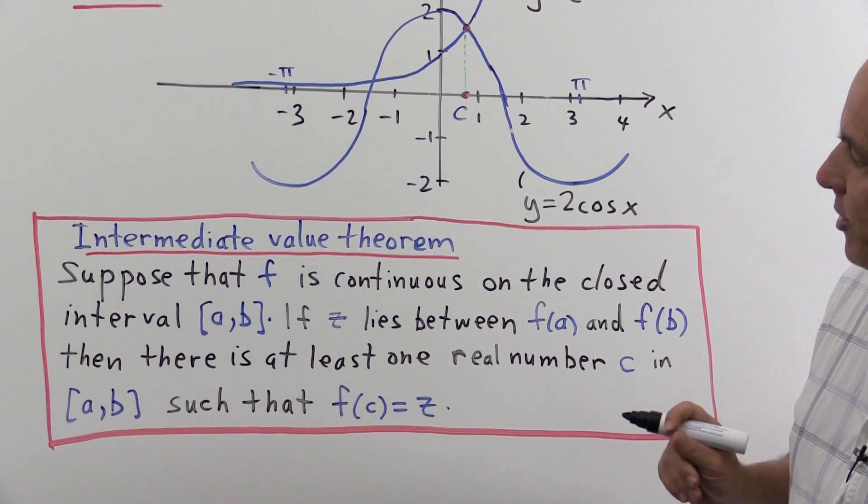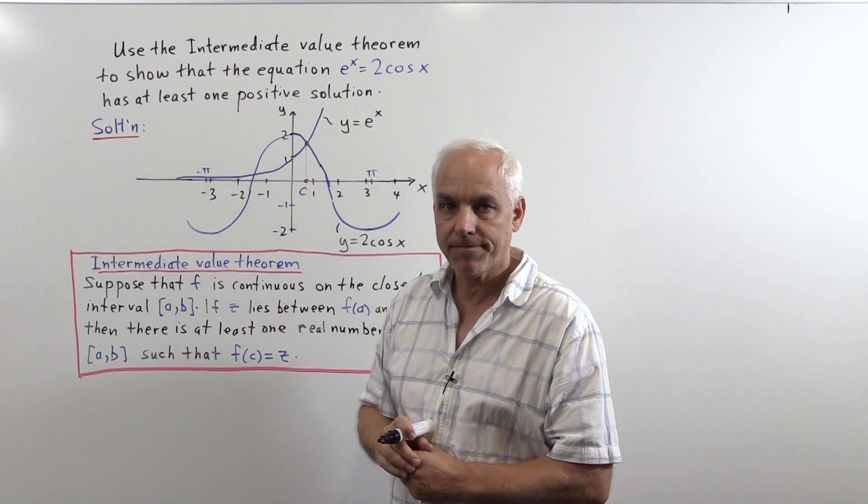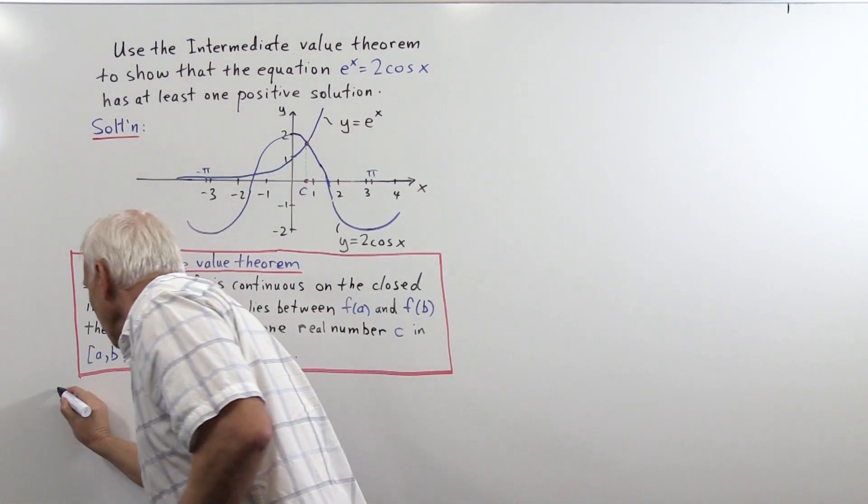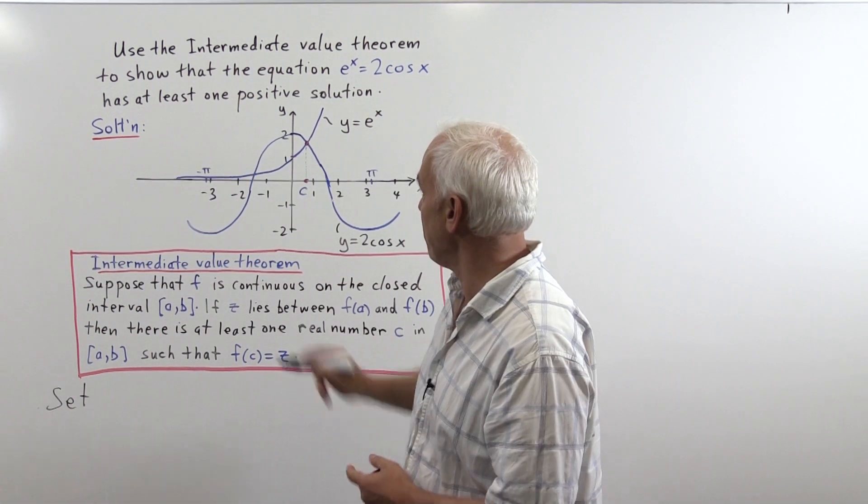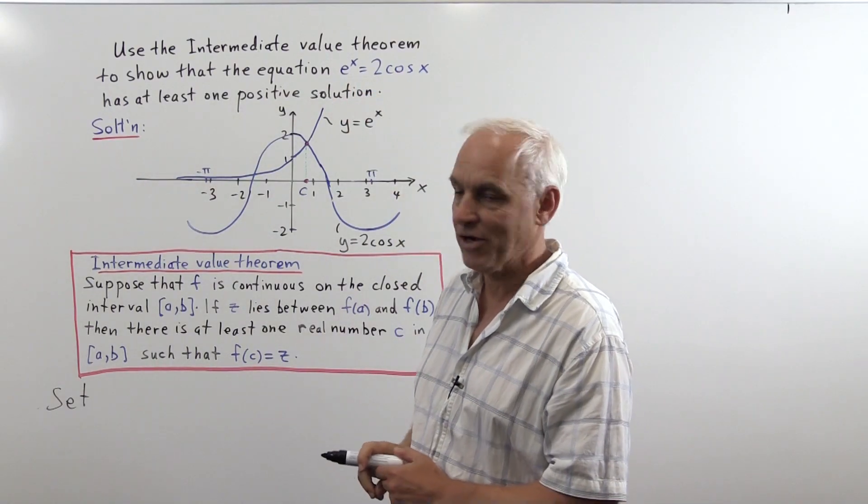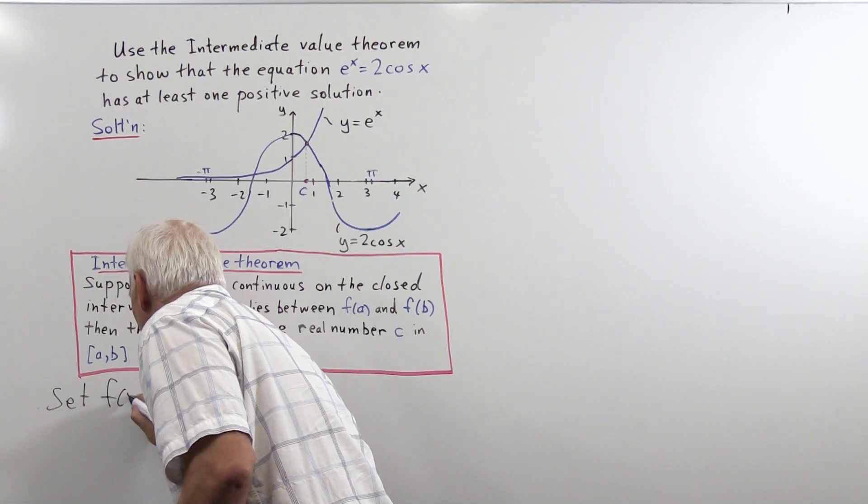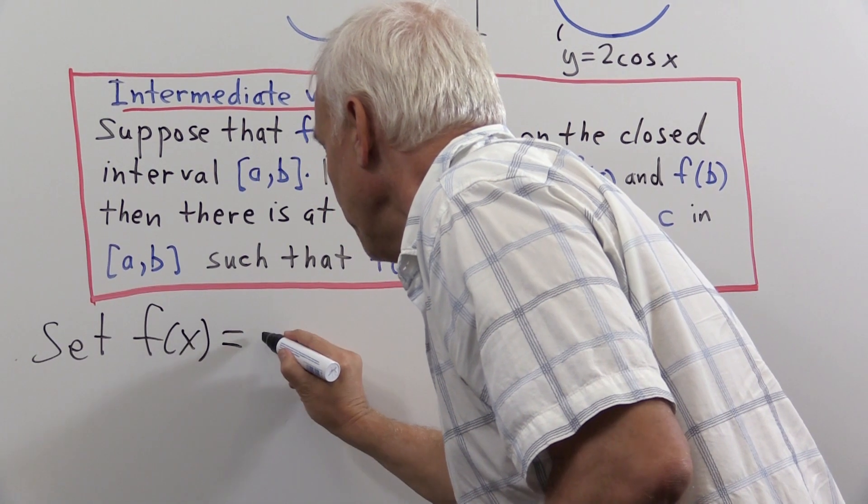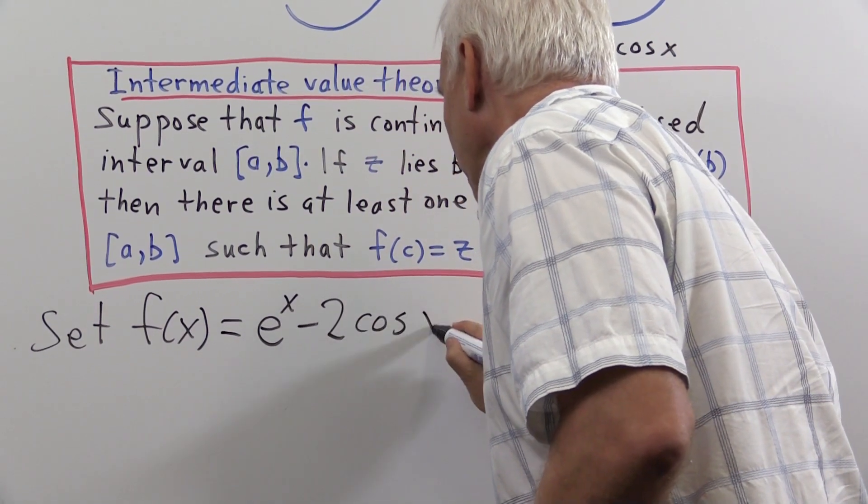So how are we going to apply the Intermediate Value Theorem to solve this problem? Well, the first thing we're going to do is create a relevant function f which encodes both of these two functions. So we're going to set f(x) equal to the difference between e^x and 2cos(x).